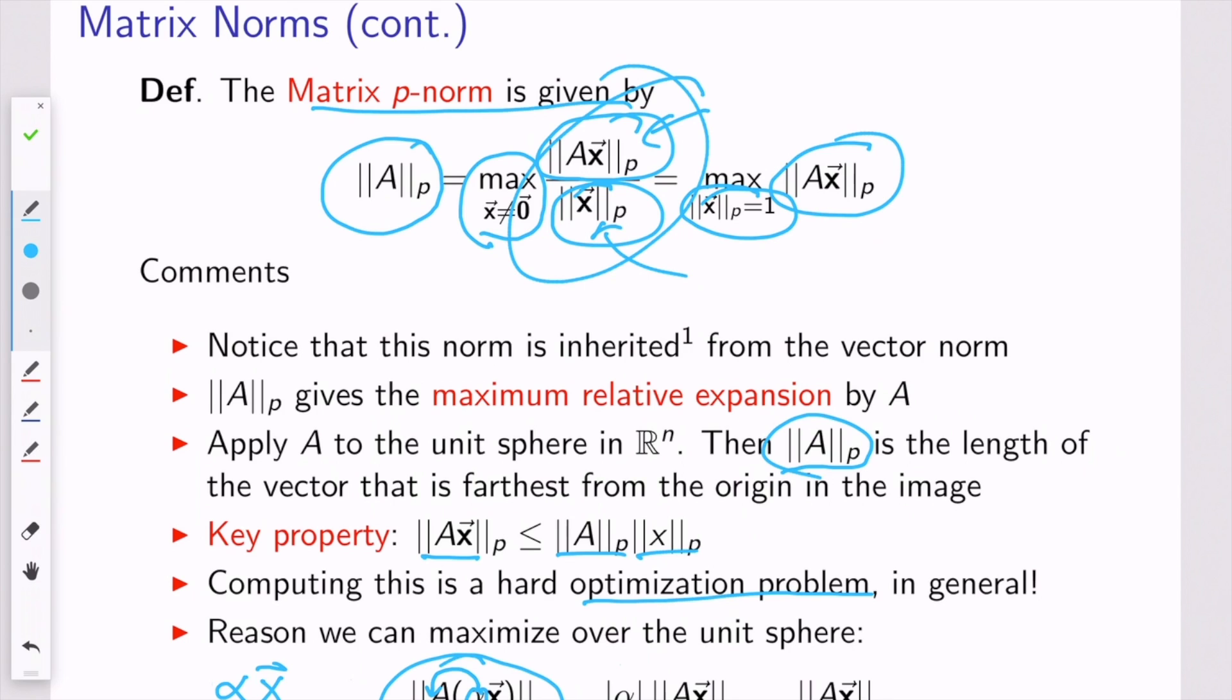And then we can do the exact same thing in the denominator. We can use the scaling property of the vector norm to bring this alpha out, and they cancel out. We're left with this definition here that shows it doesn't matter how long you choose x to be, so we might as well choose x to have a p-norm of 1, in which case this denominator becomes a 1 here, and we're maximizing this quantity just over the unit sphere.